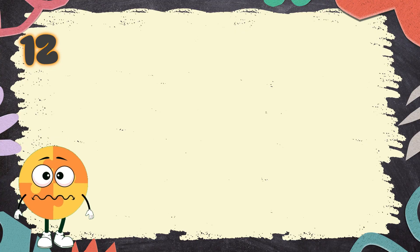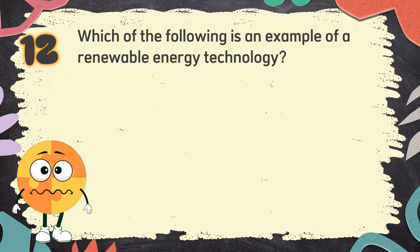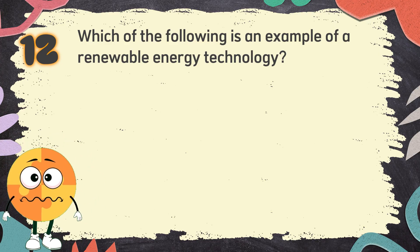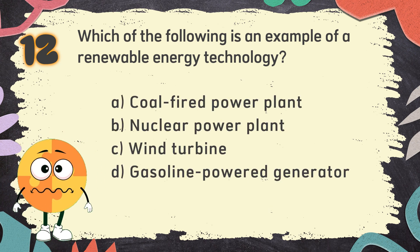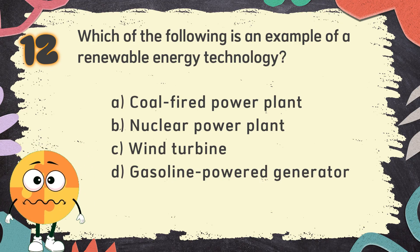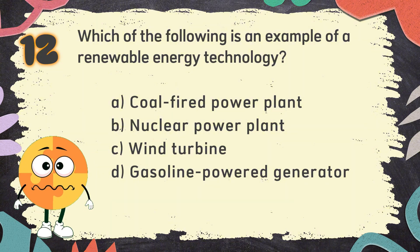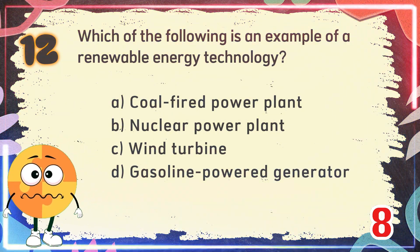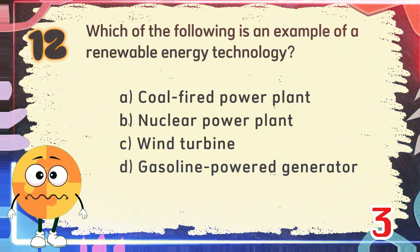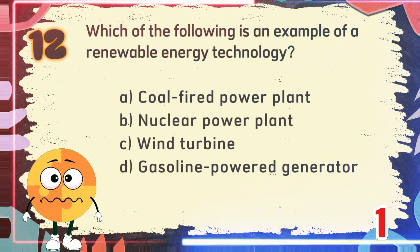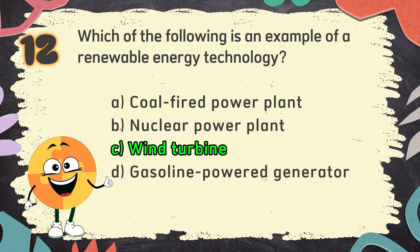Number 12: Which of the following is an example of a renewable energy technology? The choices are: A. Coal-fired power plant, B. Nuclear power plant, C. Wind turbine, D. Gasoline-powered generator. The correct answer is C. Wind turbine.